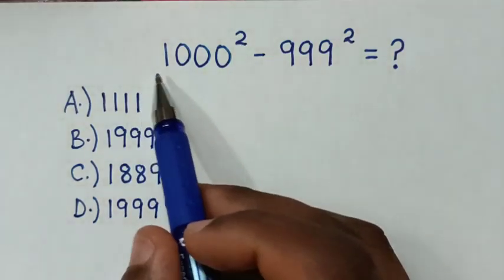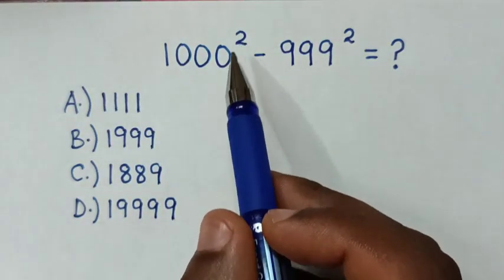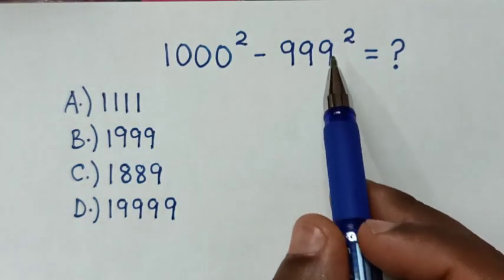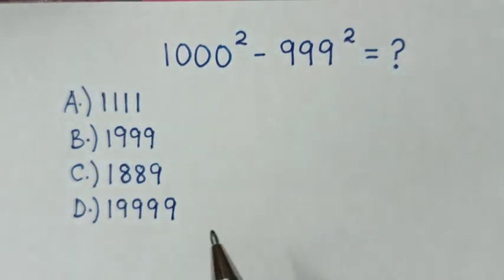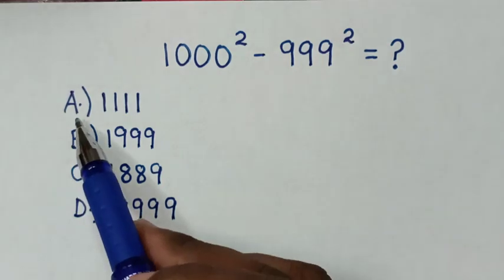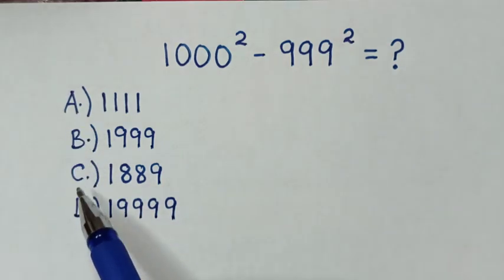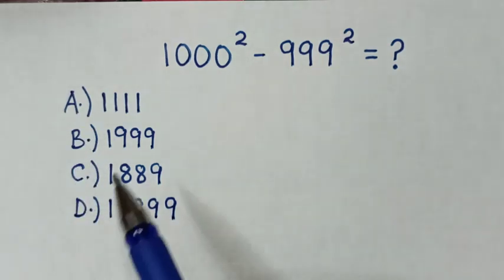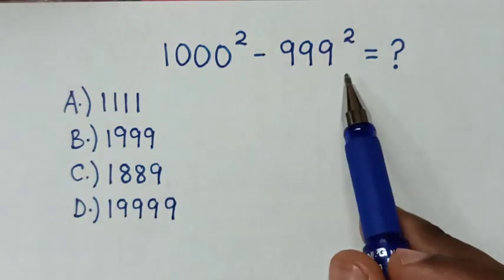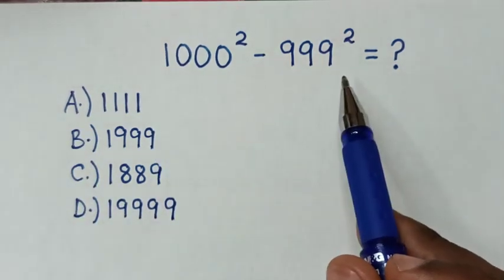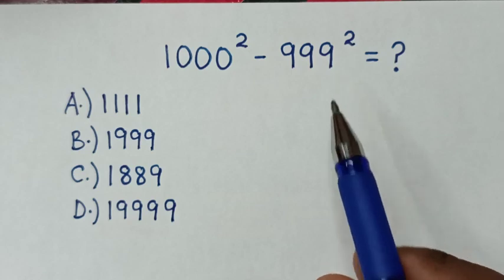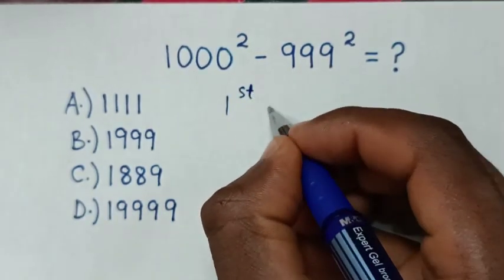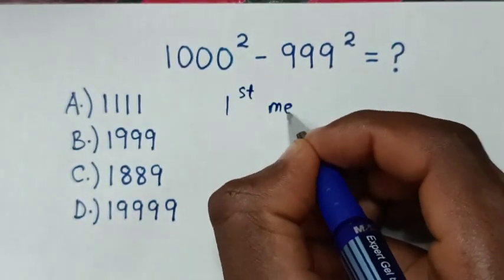Hello. How to solve 1000 square minus 999 square — select the answer from A, B, C, or D. From this problem, we'll solve in 3 methods. We'll start with the first method.